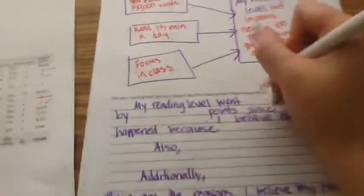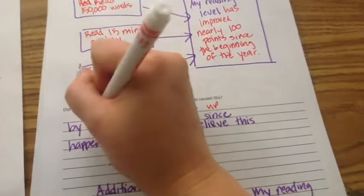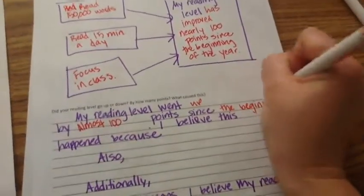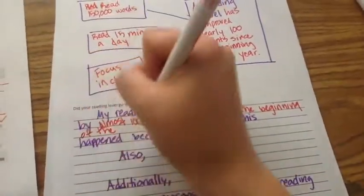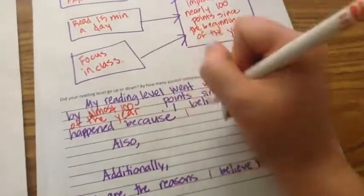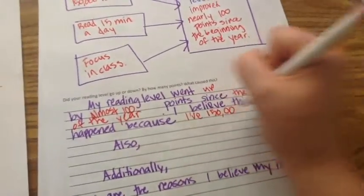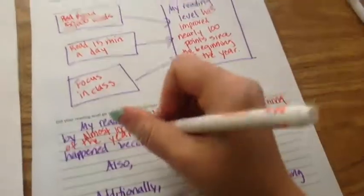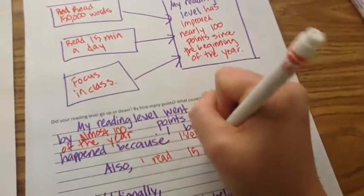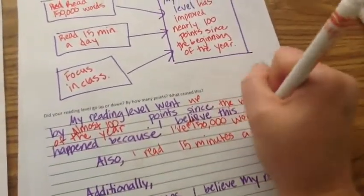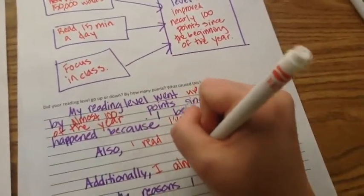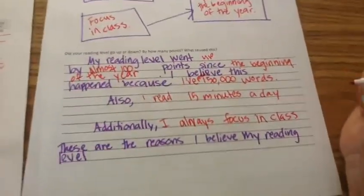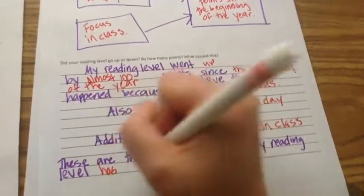My reading level went up by almost 100 points since the beginning of the year. I believe this happened because I've read 150,000 words. Also, I read 15 minutes a day. Additionally, I always focus in class. And then I conclude my paragraph. These are the reasons I believe my reading level has consistently gone up.